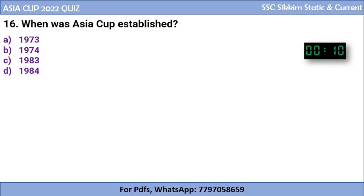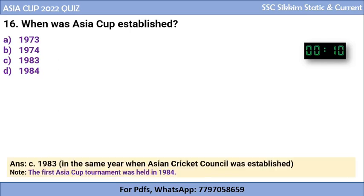Question 16: When was Asia Cup established? The options are 1973, 1974, 1983, or 1984. The correct answer is 1983. The first Asia Cup was held in 1984, but the Asia Cup was established one year before that, in 1983, the same year the Asian Cricket Council was established.